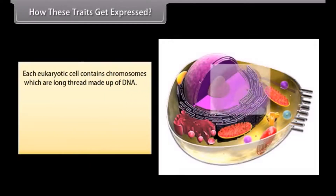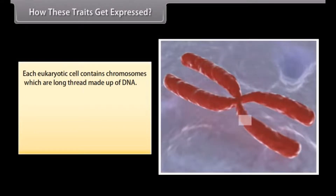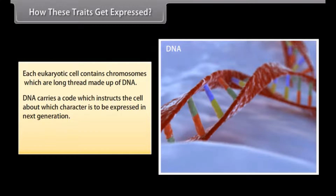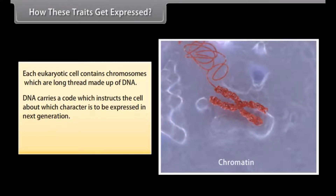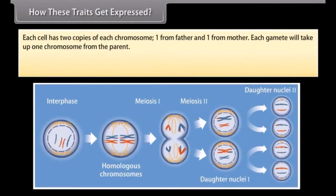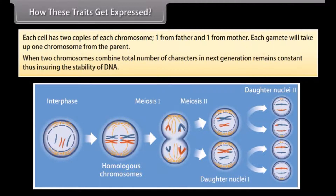How these traits get expressed: Each eukaryotic cell contains chromosomes, which are long threads made up of DNA. DNA carries a code which instructs the cell about which character is to be expressed in the next generation. A part of DNA which codes for a single character is called a gene. Each cell has 2 copies of each chromosome — one from the father and one from the mother. Each gamete will take up one chromosome from the parent. When two chromosomes combine, the total number of characters in the next generation remains constant, thus ensuring the stability of DNA.